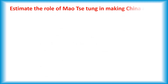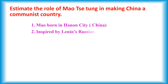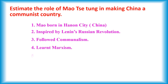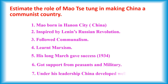The next question is: Estimate the role of Mao Zedong in making China a communist country. The answer is as follows. 1. Mao was born in a non-city, China. 2. Inspired by Lenin's Russian Revolution. 3. Followed communism. 4. Learned Marxism. 5. His long march gave success, 1934. 6. Got support from peasants and military. 7. Under his leadership, China developed well.